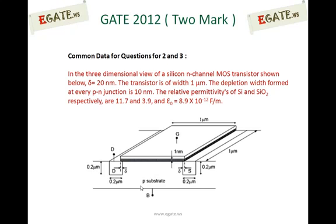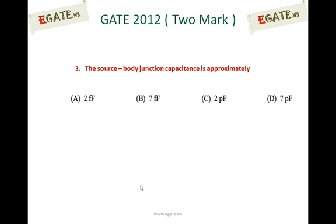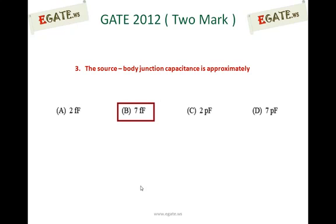For this given diagram, these are the information given, and you need to calculate: Source Body Junction Capacitance is approximately — A: 2 femtofarads, B: 7 femtofarads, C: 2 picofarads, D: 7 picofarads. The correct answer for this one is B, 7 femtofarads.